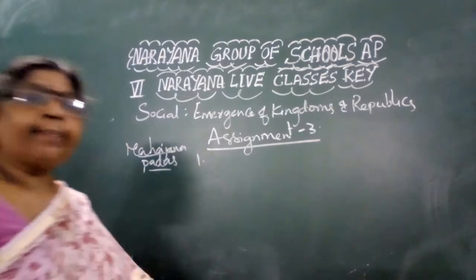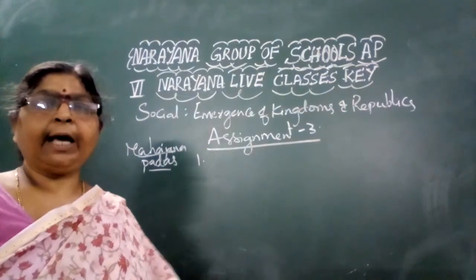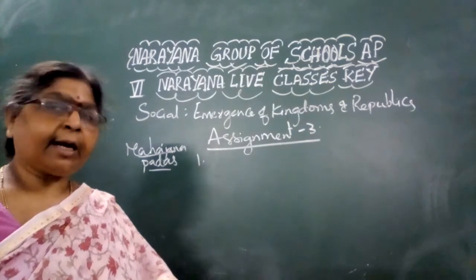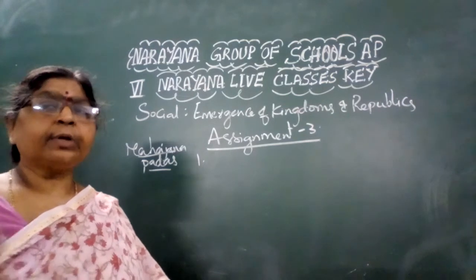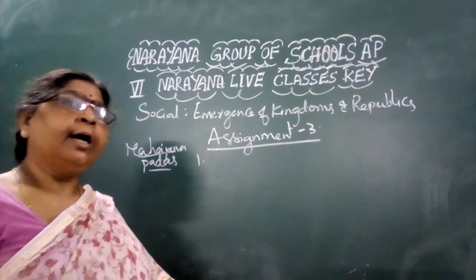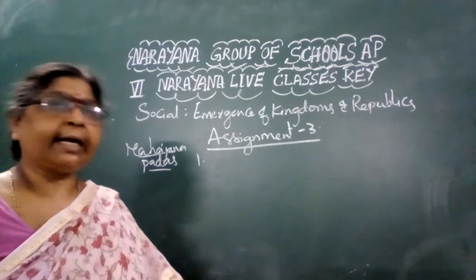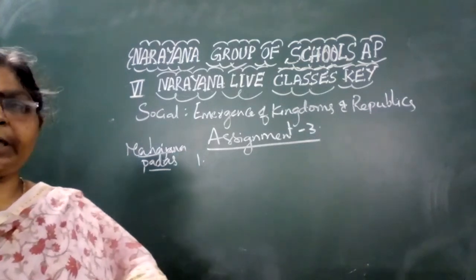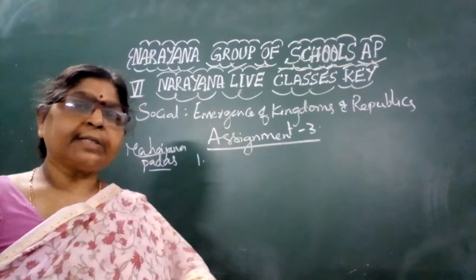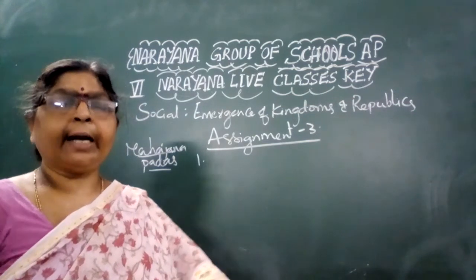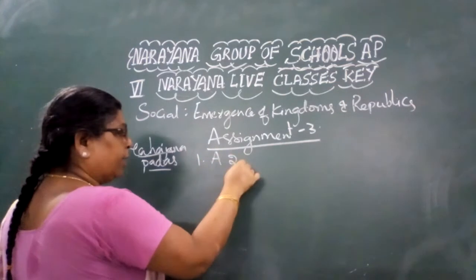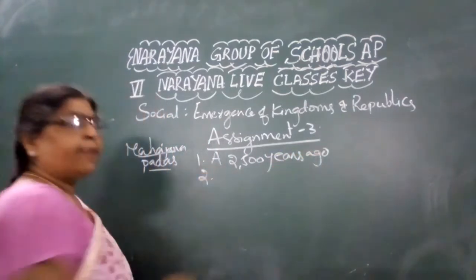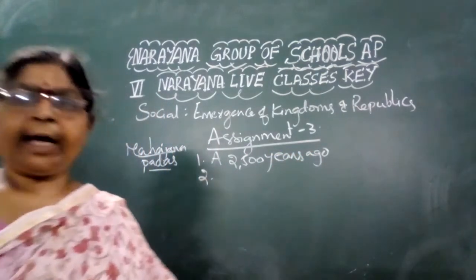The first question: What is the period of the Mahajanapadas? In the map it was clearly mentioned that it is 600 BC. We are currently in 2020, so 600 BC means 2000 plus 600 — that is 2600 years ago. Approximately 2500 years ago is the right answer. So the correct option is Option A: 2500 years ago.